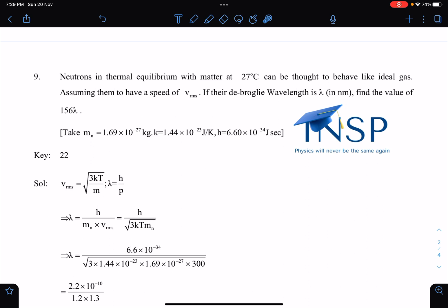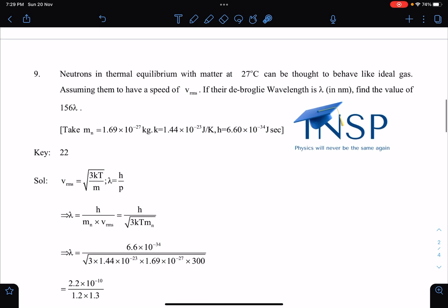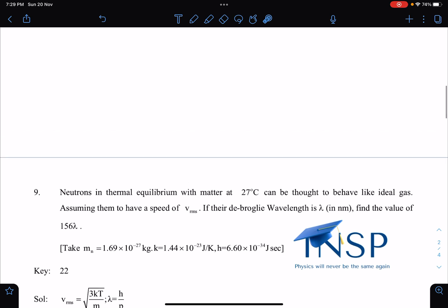So you can see neutrons in thermal equilibrium with matter at 27 degrees centigrade can be thought to behave like ideal gas. Assuming them to have a speed of v_rms, that means all of them are having a speed of v_rms.